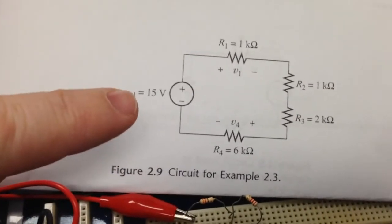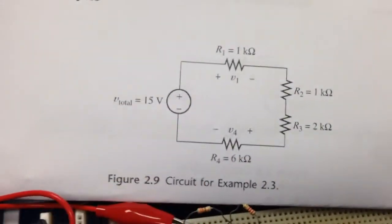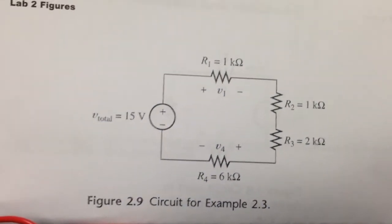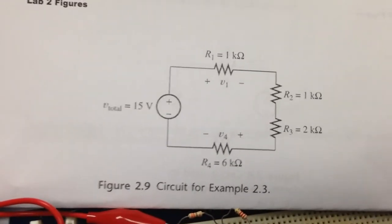What we find is the 15 volts is spread across each of the four resistors, but not equally because these resistors do not have equal values.